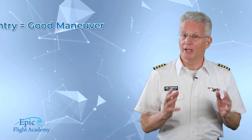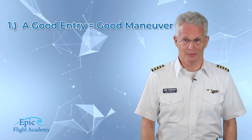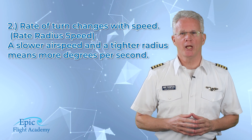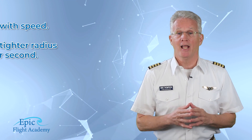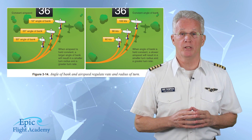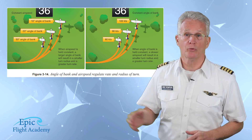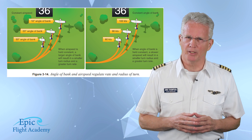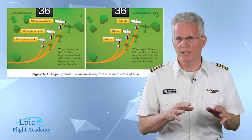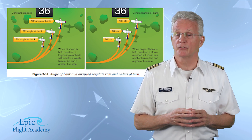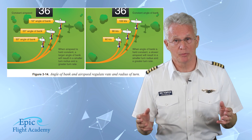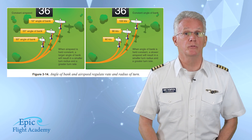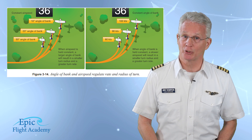Number one: a good entry will equal a good maneuver. Number two: the rate of turn changes with speed. Have a look at this rate, radius, and speed figure from chapter three of the Airplane Flying Handbook. If we hold a constant airspeed, the radius will change with the bank angle. If we hold a constant bank angle, the radius will change with the airspeed. So a slower airspeed and a tighter radius means more degrees per second in a turn.